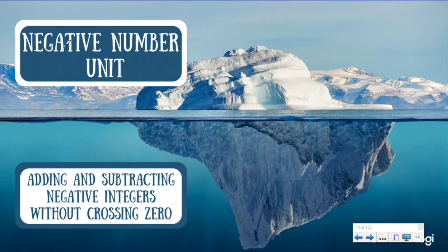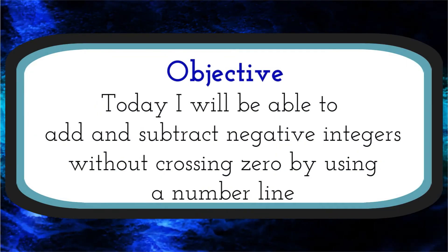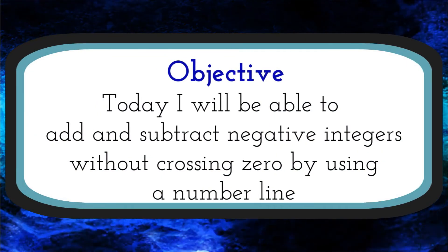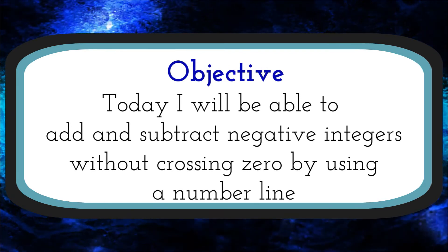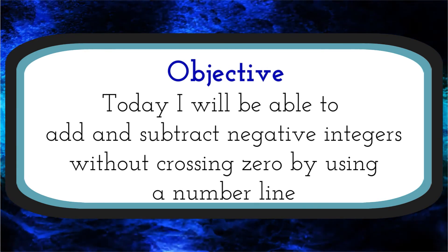What up everybody? Back again here at the negative number unit. Today we're going to be adding and subtracting negative integers without crossing zero. Let's dive under the water and see what our objective is today. Our objective: today I will be able to add and subtract negative integers without crossing zero by using a number line.